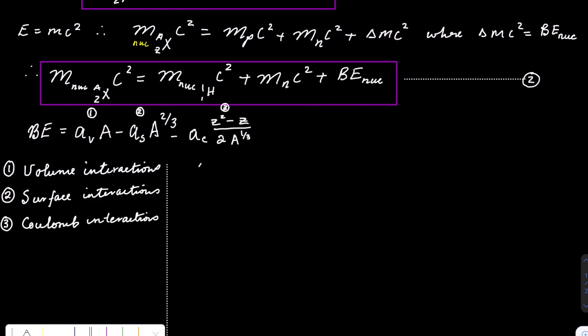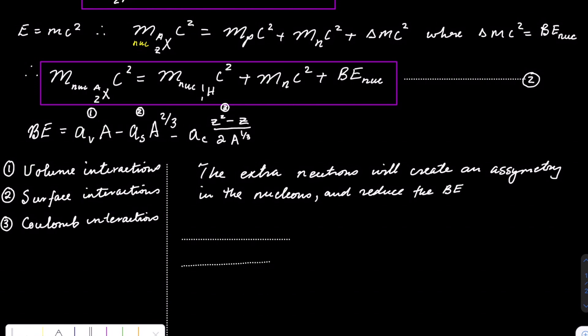Extra neutrons in the nucleus create an asymmetry, which has a tendency to reduce the binding energy. This is prevalent for nucleons that are above A equal to 20. Let's pack protons and neutrons on the energy levels according to the Pauli Exclusion Principle.